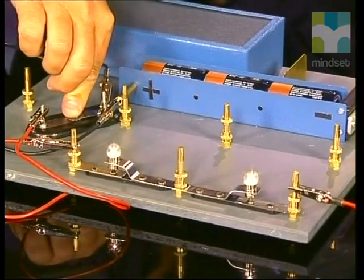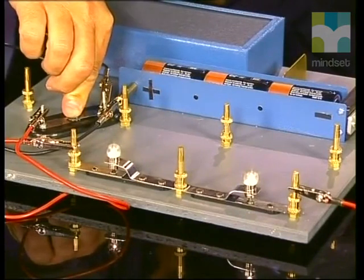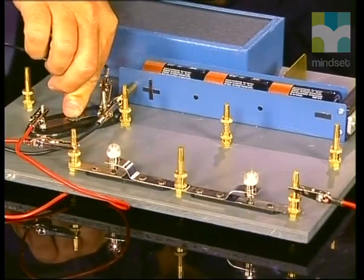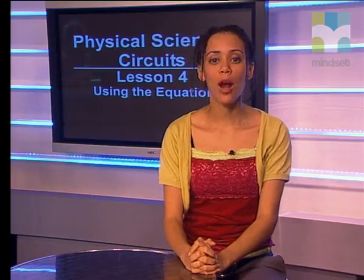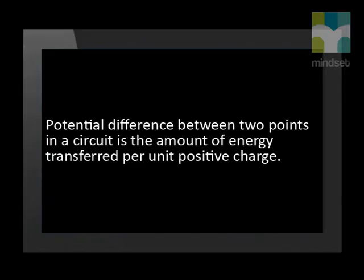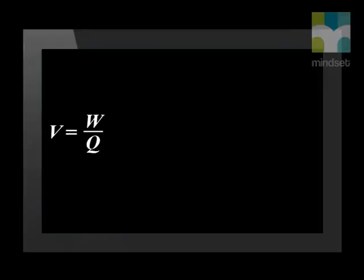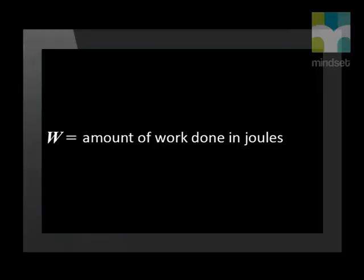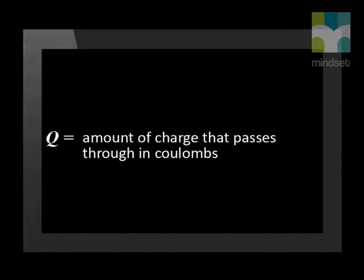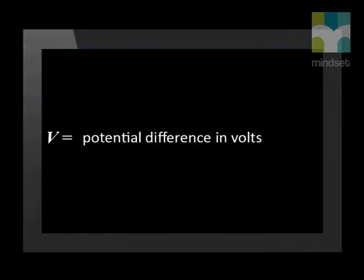The work that is done is the amount of electrical energy transferred into heat and light in each of the bulbs. We define potential difference between two points in a circuit as the amount of work done per unit positive charge. We can translate this into the equation V equals W divided by Q, where W equals the amount of work done in joules, Q is the amount of charge that passes through in coulombs, and V is the potential difference in volts.